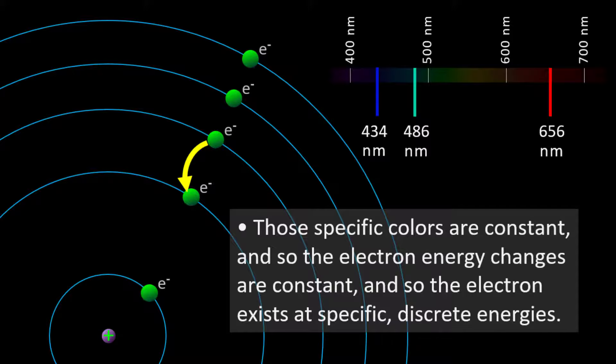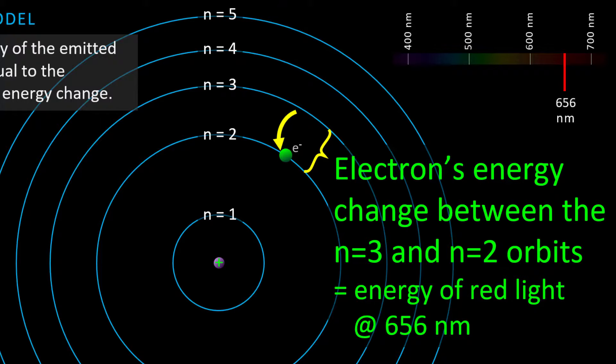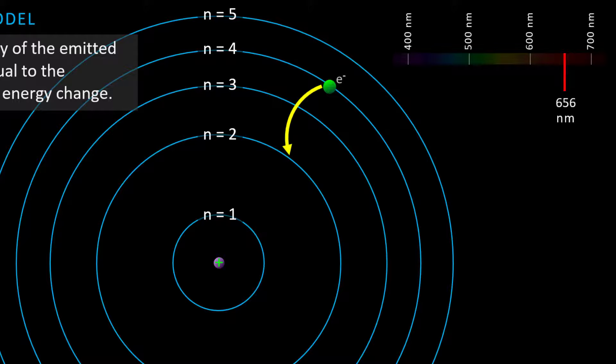The orbits are numbered with integers, which has important mathematical significance in Bohr's analysis and representing the electron's energy. Bohr found that these energies result in hydrogen's emission spectrum. An electron's energy change from n equals 3 to n equals 2 emits the energy of red light. An electron's energy change from n equals 4 to n equals 2 emits the energy of blue-green light, and from 5 to 2 gives blue light.